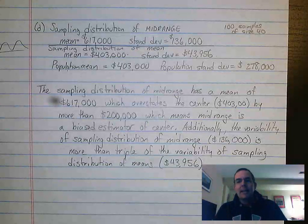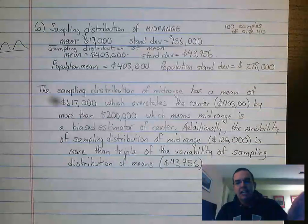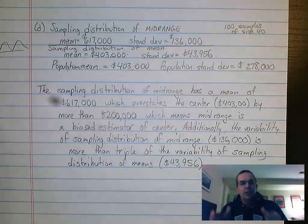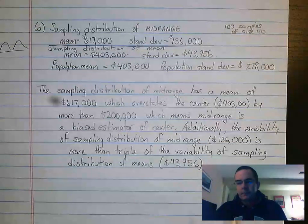So this thing has high bias. That's one kind of check in the negative column against mid-range as our statistic. Second, our variability.